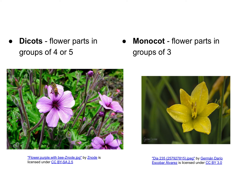Dicots have flower parts in groups of four or five — for example, five petals — and this also applies to stamens. Monocots have flower parts in groups of three, which can be multiples of three, so three, six, nine, et cetera. This also applies to the stamens as well.